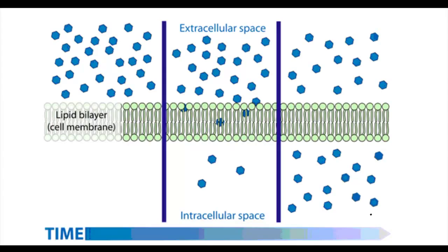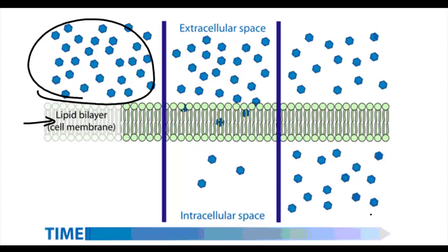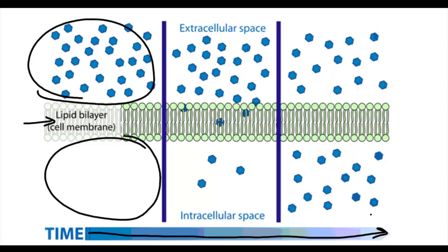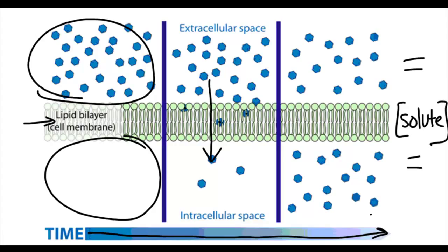In this example, we have solute molecules in the extracellular space moving across a cell membrane or lipid bilayer to an area of low solute concentration. So over time, we have molecules of solute moving from an area of high concentration to an area of low concentration, until we have equivalent solute concentration on both sides of the lipid bilayer — 14 solute molecules on this side and 14 on this side in the same volume, giving them equal concentration.